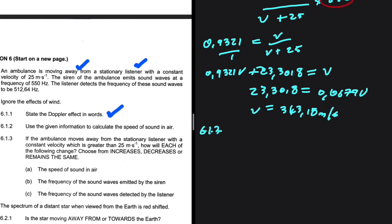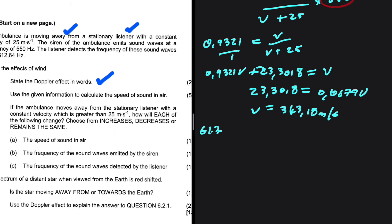6.1.3, a bit conceptual. The ambulance is now moving away from the listener with a velocity that is greater than 25. I will each of the following change, choose from increase, decrease or remain the same.